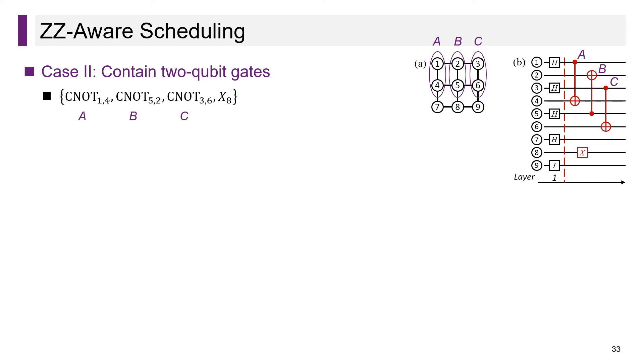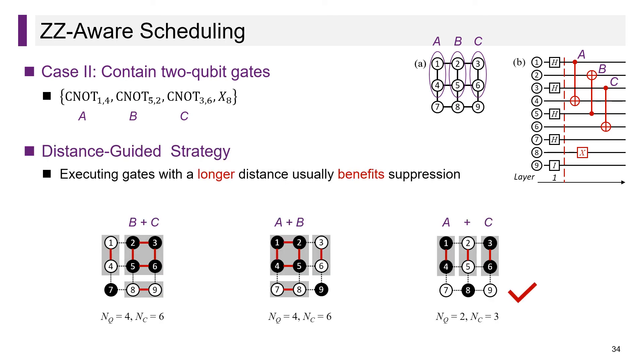After deciding the first layer of gates, the schedulable gates now have three two-qubit gates, which we label by A, B, and C respectively. In this case, we propose a distance-guided strategy based on the observation that executing gates with a longer distance usually benefits suppression. The bottom figure shows three ways to execute CNOT gates. A and C have a longer distance than the other cases, and executing them simultaneously does achieve smaller N_q and N_c. The details of our strategy are kind of complicated and thus omitted here.